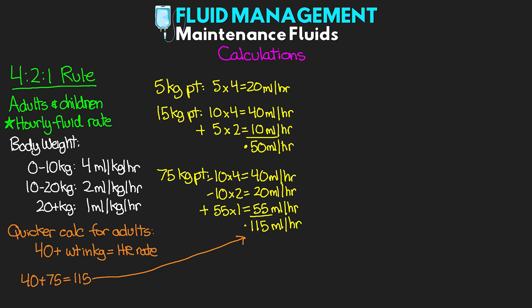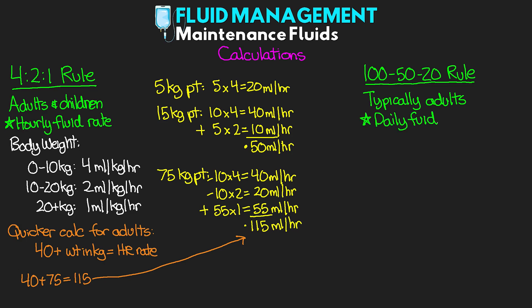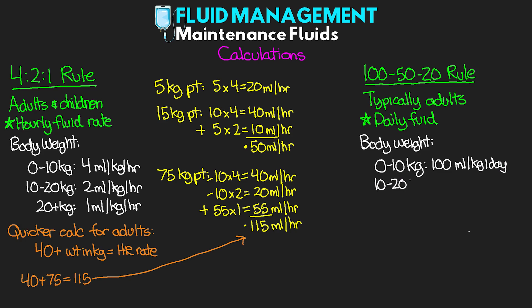Now let's talk about a different rule: the 100-50-20 rule, typically used for adults. This gives a daily fluid requirement, so divide by 24 to get the hourly rate. For the first 10 kg: 100 mL/kg/day. For the next 10 kg: 50 mL/kg/day. For everything over 20 kg: 20 mL/kg/day. This is very similar to the 4-2-1 rule — if you multiply the 4-2-1 values by 25 hours, you get approximately 100, 50, and 25, which is close to 20.